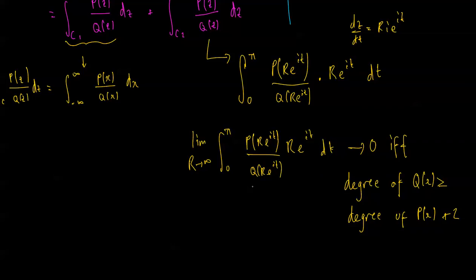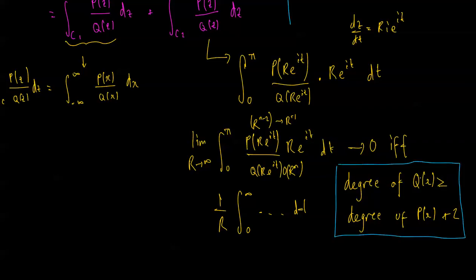Because if this is a polynomial of z to the power of n and this is a polynomial of z 2 less than that, well, we'd have r to the n minus 2 here, we'd have r to the n, and if I multiply by r this will become r minus 1, hence the overall will be 1 on r times some integral dt. But as we take the limit as r goes to infinity this term will go to 0, hence the whole integral will go to 0. So this is a necessary requirement, so the degree of the denominator is greater than or equal to the degree of the numerator plus 2.